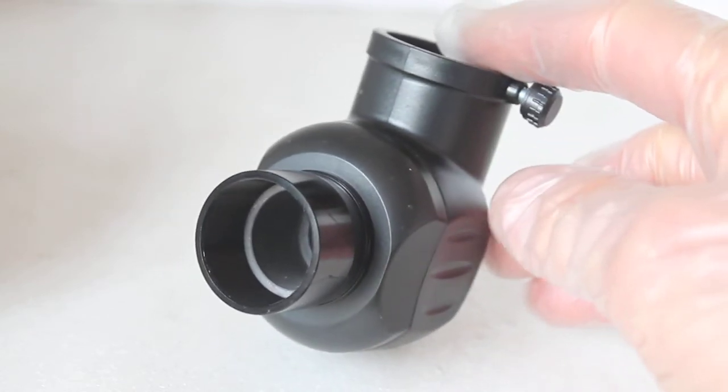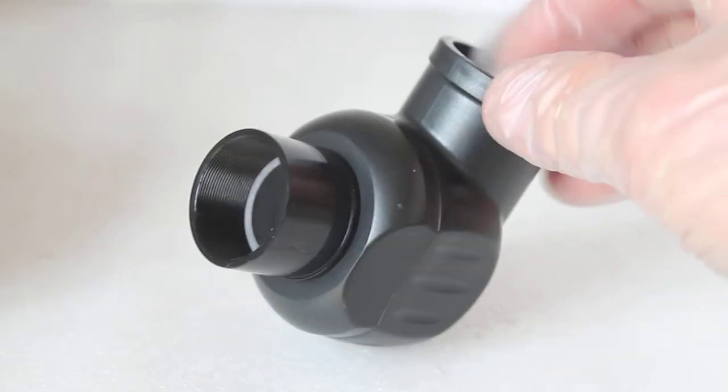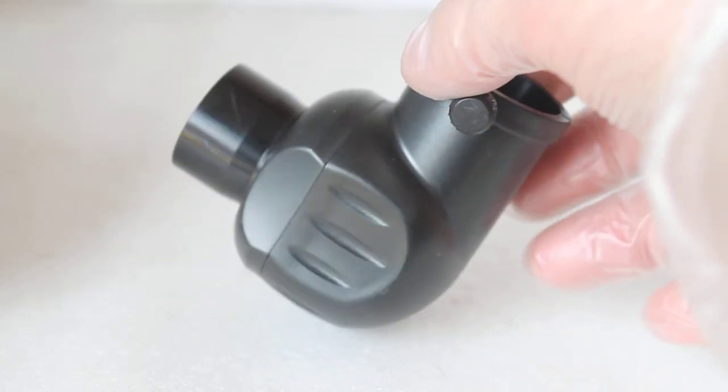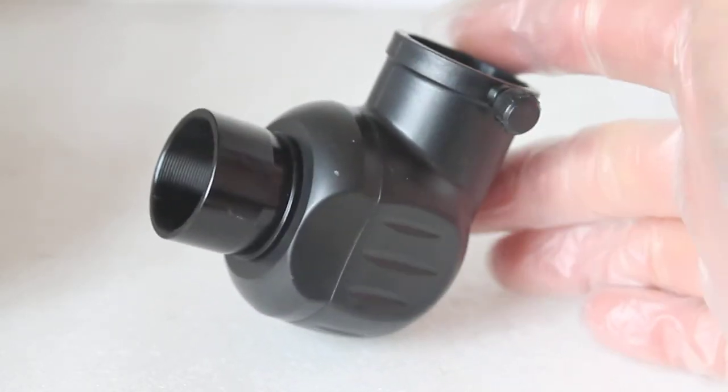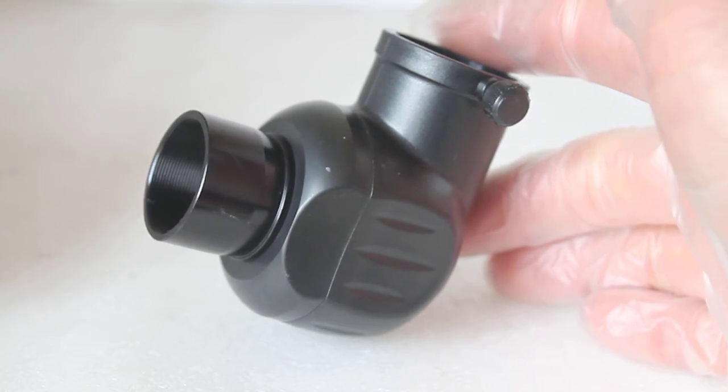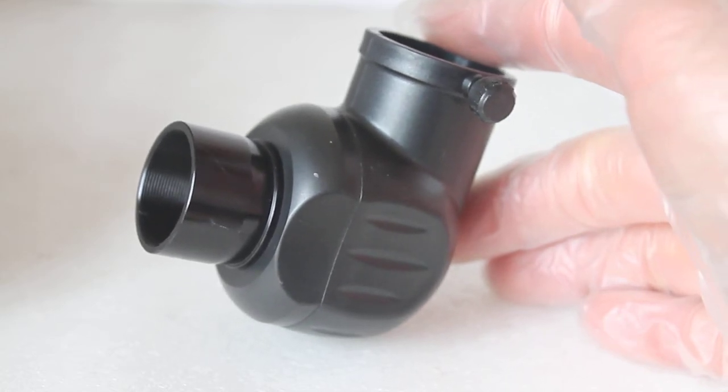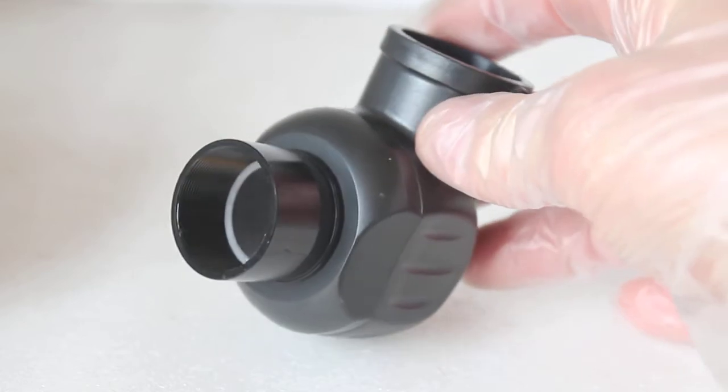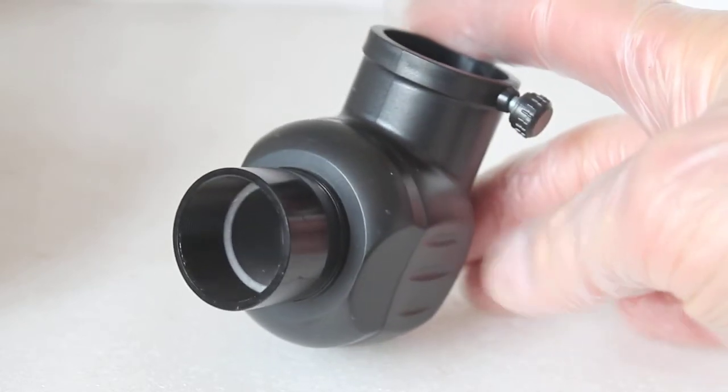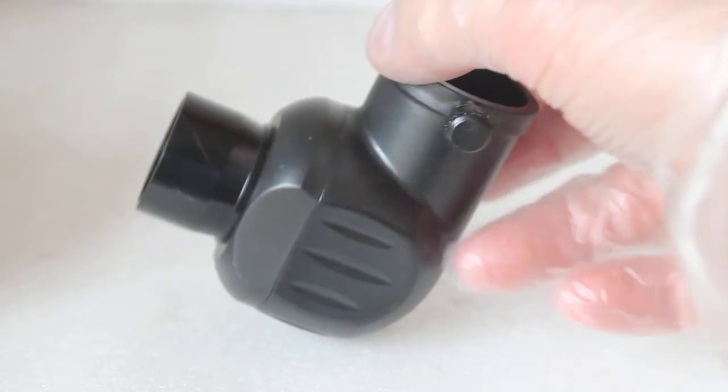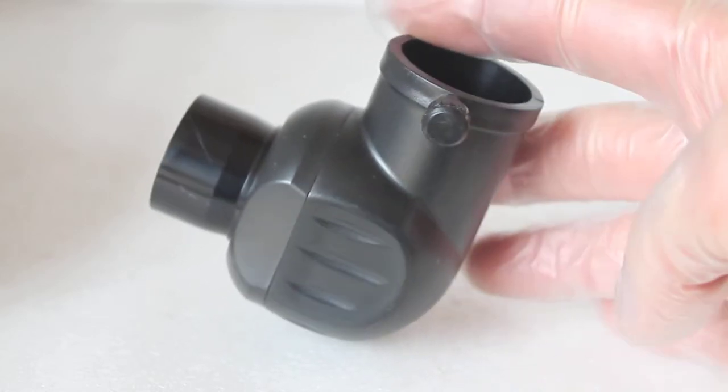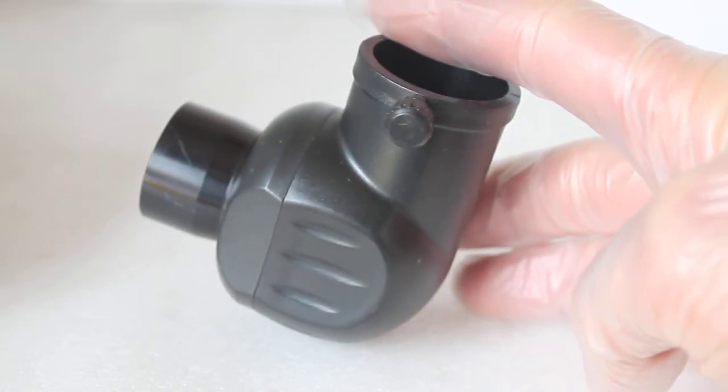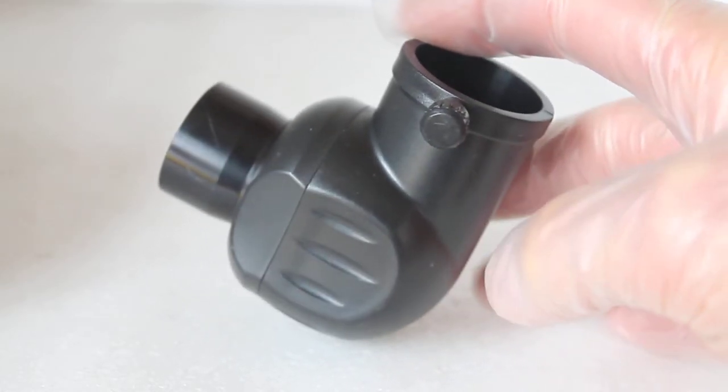What you'll notice with a mirror diagonal is it'll be the right way up, but the image will be left to right opposite. To some people that's a little bit tricky to use, especially for terrestrial objects. To others, not—it's just personal preference. There is another way of getting correct orientation with a refractor, and that is to use a 45-degree diagonal.